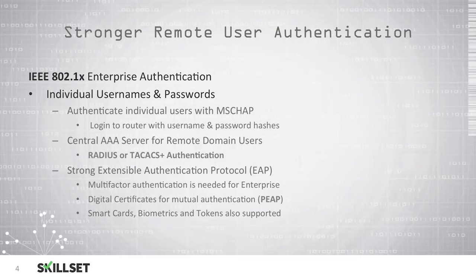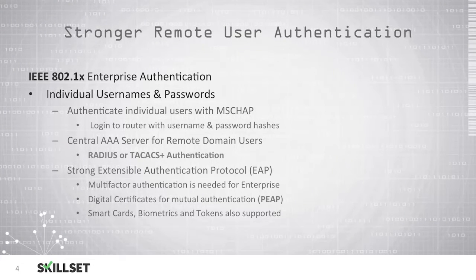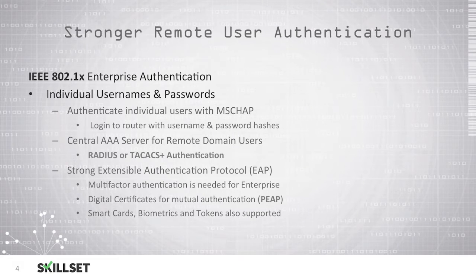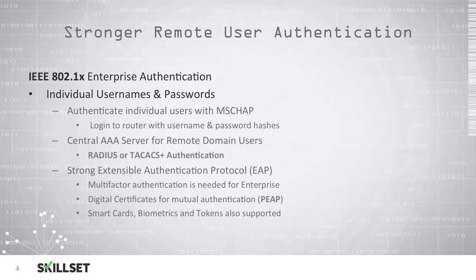IEEE 802.1x allows enterprise authentication where each user uses an individual username and password. You can authenticate users using Microsoft CHAP, and individuals log into the router using their username and a password hash, so the router is not actually storing the user's password. These systems typically have AAA servers which provide authentication, authorization, and accounting for remote users using either RADIUS or TACACS Plus. EAP, or Extensible Authentication Protocol, provides multi-factor authentication for enterprise environments. With PEAP, or Protected Extensible Authentication Protocol, you can use digital certificates for mutual authentication between the server and the client.